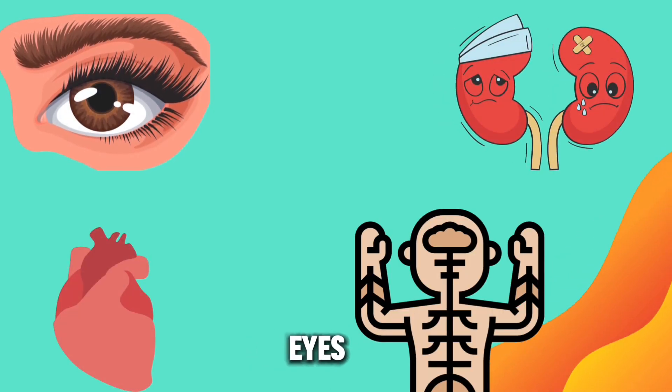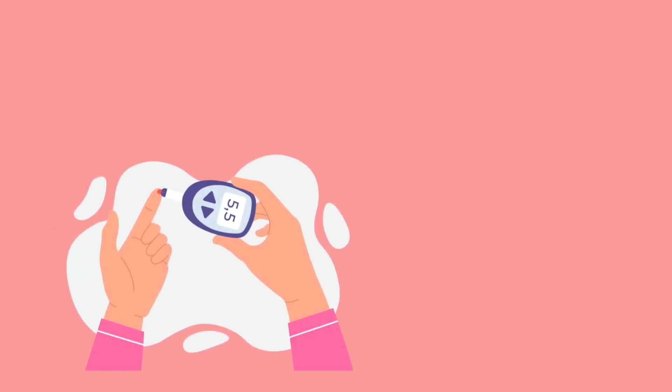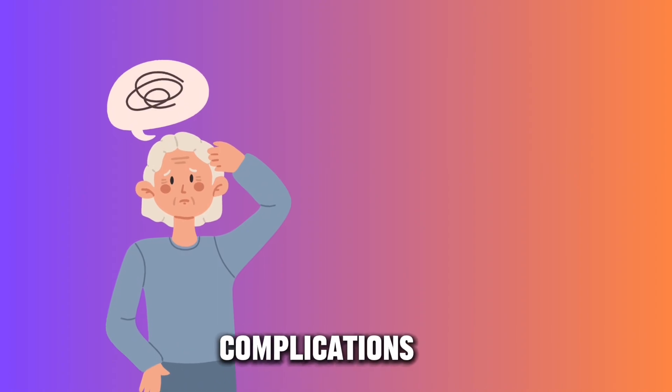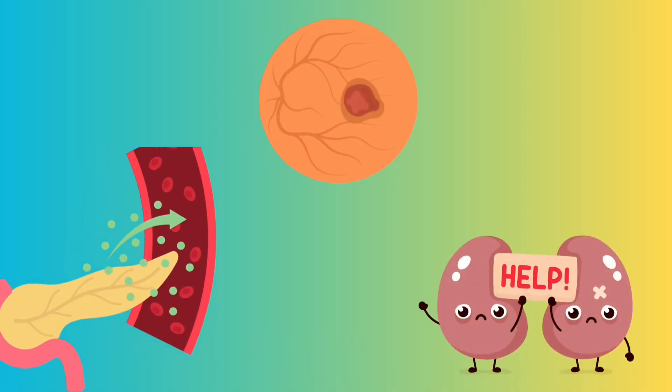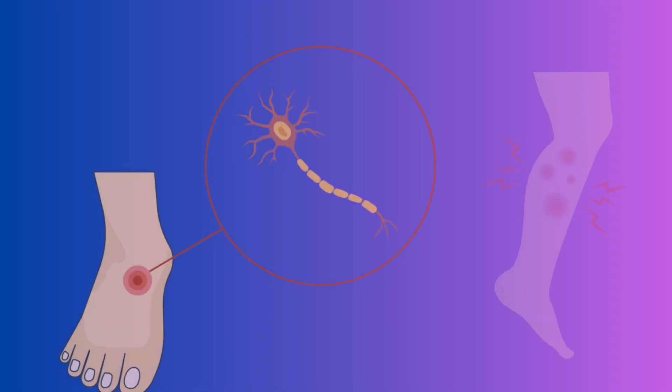such as the eyes, kidneys, heart, and nerves. Over time, this damage can lead to complications like diabetic retinopathy, kidney disease, cardiovascular issues, and neuropathy.